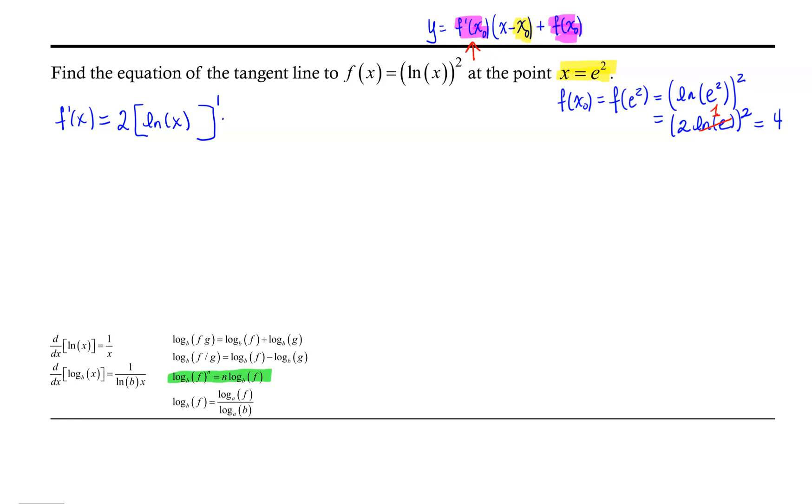Then we have to multiply by the derivative of that argument, the derivative of ln(x). The derivative of ln(x) is simply 1/x. So our derivative f'(x) is 2·ln(x)/x.